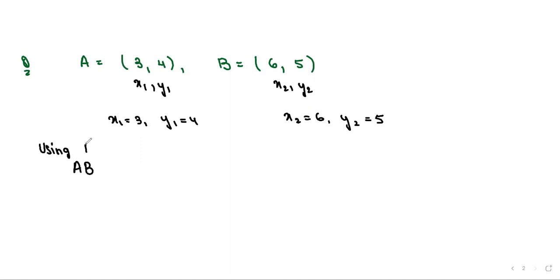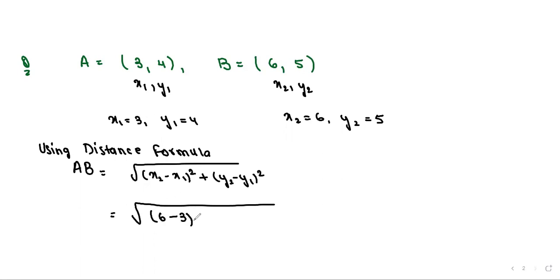We can write down first the formula which is AB is equal to square root of x2 minus x1 whole square. So let us first write down the formula. Every time we should write down the formula and then substitute the values. So here we can clearly see that x2 is 6, so 6 minus x1 is 3. So 6 minus 3 whole square plus y2 is 5, so 5 and y1 is 4, so 4 whole square.